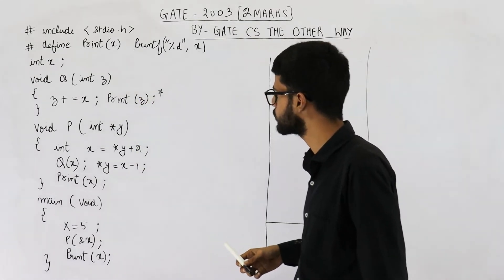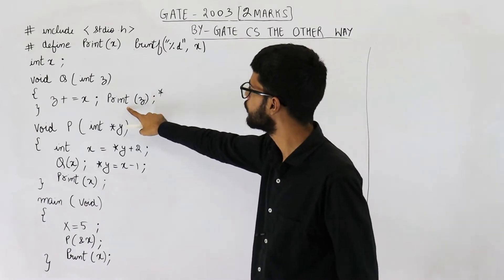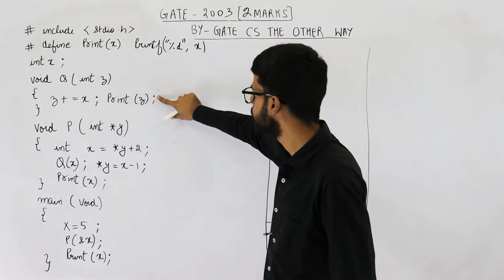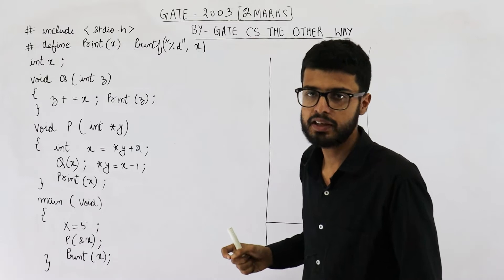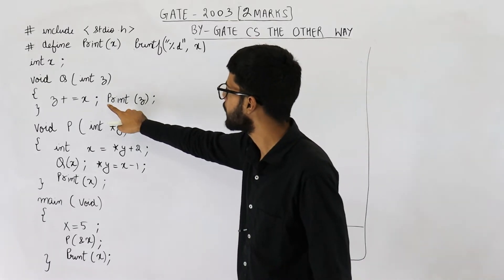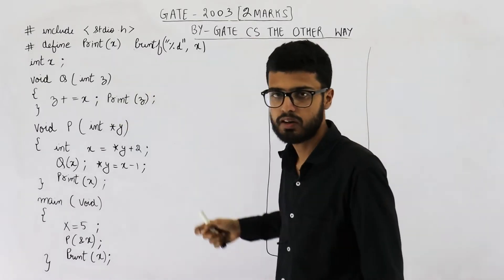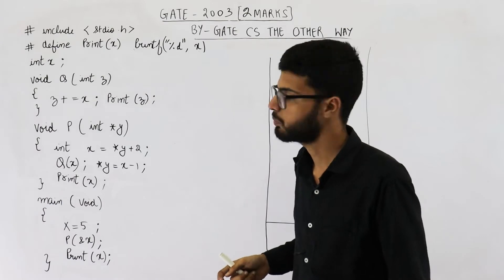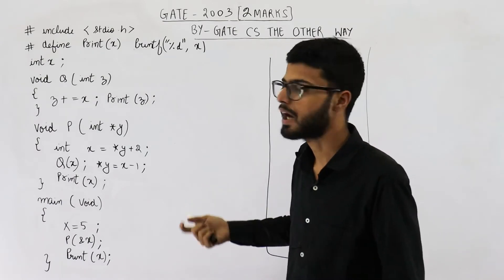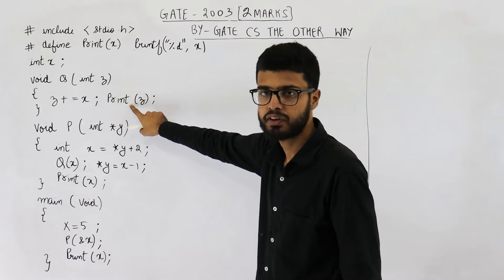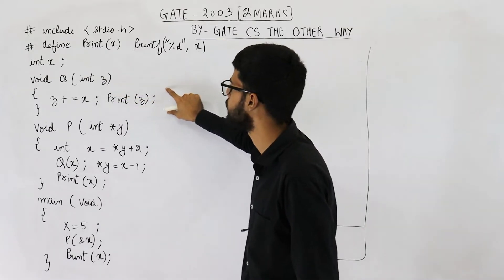Whenever you analyze this code, you might think that this line will give you an error. Because in C language, there is no predefined function spelled as P-R-I-N-T with a variable name in brackets. Instead, we have a function printf, but you haven't written 'f' here. That means the compiler has to give an error on this line.